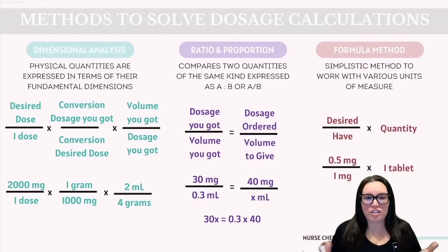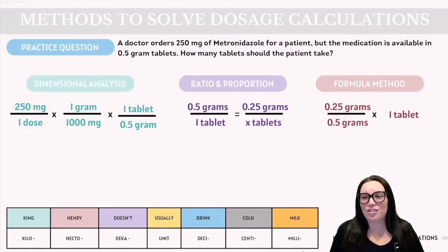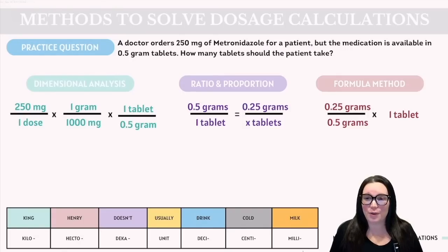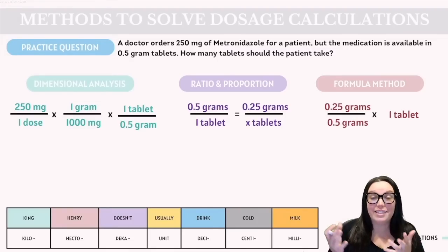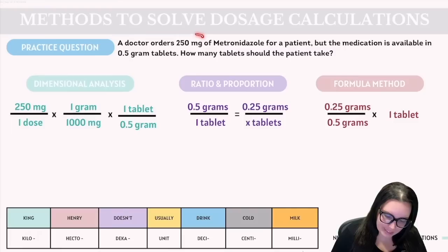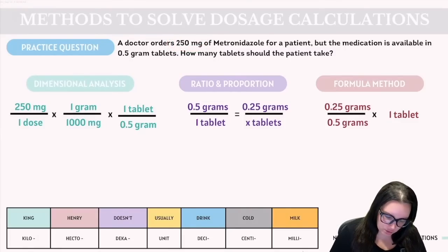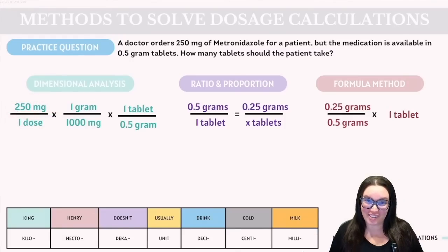Let's try some practice questions using each of these methods. The question states: a doctor orders 250 milligrams of metronidazole for a patient, but the medication is available in 0.5 gram tablets. How many tablets should the patient take? Starting with dimensional analysis, we begin with our desired dose over one dose — in this case, 250 milligrams over one dose.